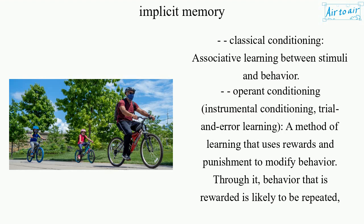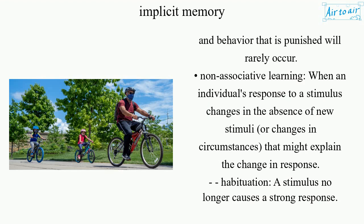Operant conditioning, also called instrumental conditioning, involves trial and error learning — a method of learning that uses rewards and punishment to modify behavior. Through it, behavior that is rewarded is likely to be repeated, and behavior that is punished will rarely occur.